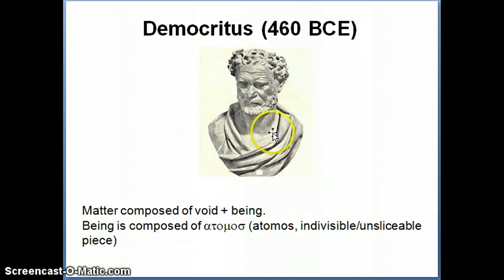And so there's a guy called Democritus, who's a philosopher around that time, and he proposed that matter is composed of something he called void, which is just emptiness and being. And being is composed of a bunch of stuff that are called atomos, which is something that's indivisible, or a piece that's no longer sliceable or divisible. So the smallest piece.